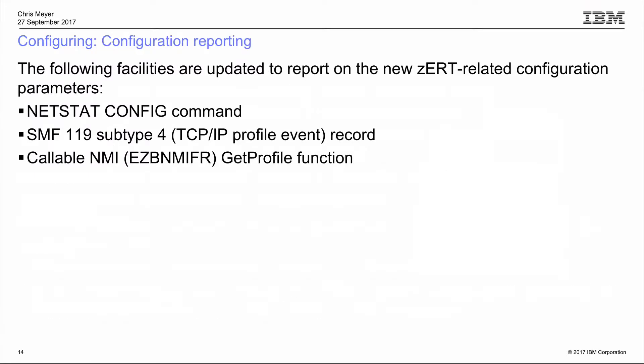Since we added new configuration, all the places you'd expect to see changes have been updated. The NETSTAT CONFIG command has new fields, SMF 119 subtype 4 TCP profile event records have new fields, and the GET PROFILE callable NMI function is updated as well.